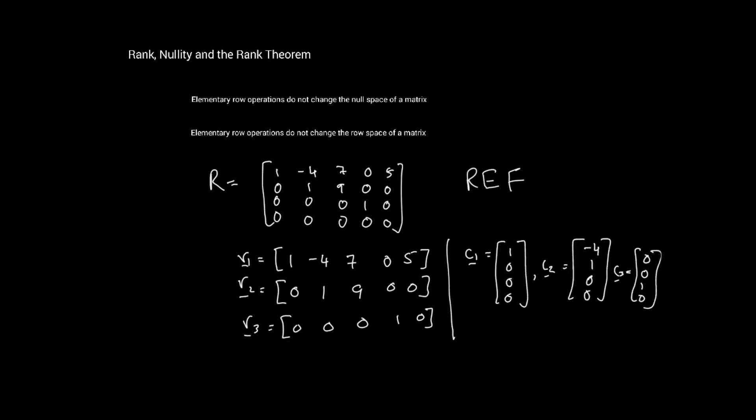These three row vectors form a basis for the row space of the reduced matrix R. And similarly, these column vectors C1, C2, C3 form a basis for the column space of R. So here we have two sets of bases for R.